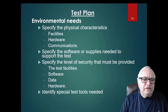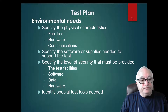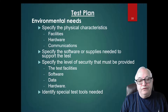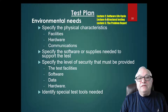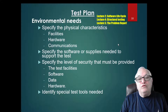Finally, specify any special tools you may need — special antennas for transmitting, for example. So environmental needs covers everything: hardware and software, anything physical you're going to need to do your testing. All these items are associated with the software lifecycle, structural testing, and problem reports from lectures two, four, and five.